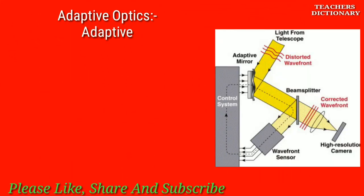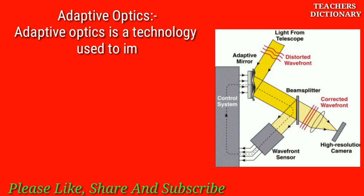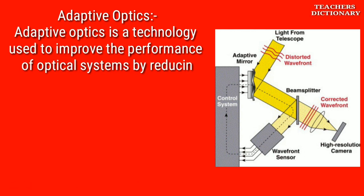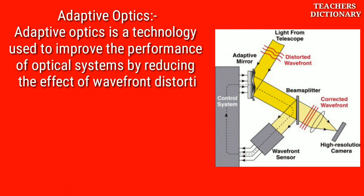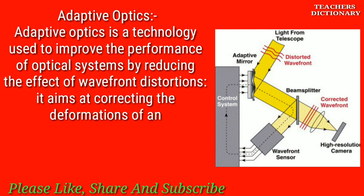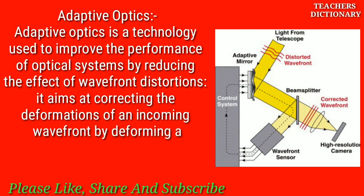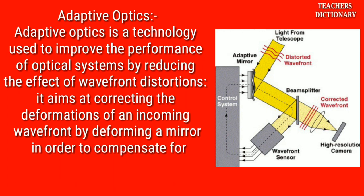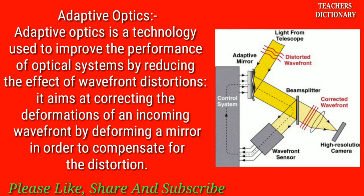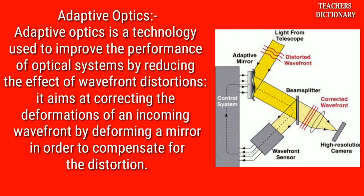Adaptive optics: Adaptive optics is a technology used to improve the performance of optical systems by reducing the effect of wavefront distortions. It aims at correcting the deformations of an incoming wavefront by deforming a mirror in order to compensate for the distortion.